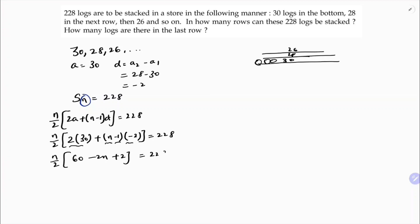228 equals 228. Now here if we'll multiply, 62n by 2 minus 2n² by 2 is 228. Here 2 to cancel, 2 times 3 times 31, so you are left with 31n minus n² equals 228.